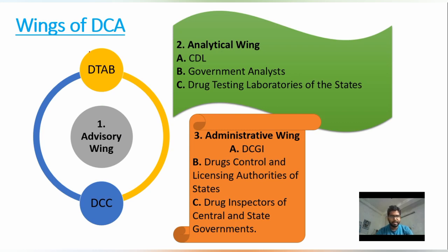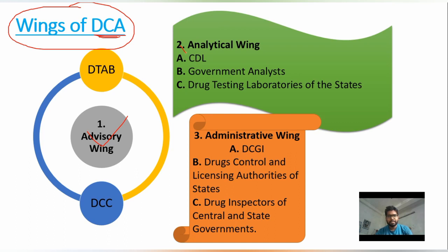The Drug and Cosmetics Act (DCA) has three wings: number one is the Advisory Wing, number two is the Analytical Wing, and number three is the Administrative Wing. In the Advisory Wing, DTAB and DCC are the two main pillars.